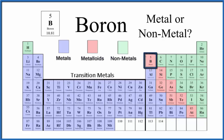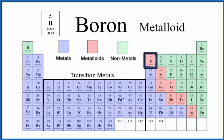Boron, right here, is a metalloid. So it has properties in between the metals and the nonmetals. The easiest way to remember is: on the left we have the metals, with the exception of hydrogen; on the right the nonmetals; and in between we have the metalloids, like boron.